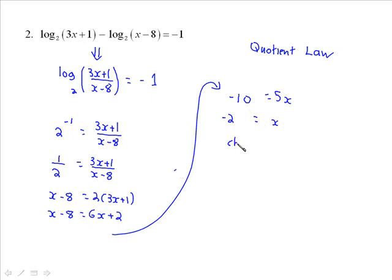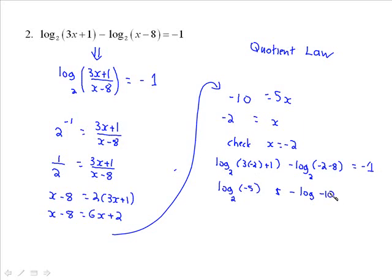Now you probably got a bad feeling about this one, but you need to check x equal negative 2. So you just sub it back into the original. Log base 2 of 3 times negative 2 plus 1 minus log base 2 of negative 2 minus 8 is equal to negative 1. And as soon as you see that you're taking the log of a negative number, then you've got it. So this is negative 6 plus 1 is negative 5, excuse me, minus the log of negative 10 base 2. And that's all I need to see. Reject, reject. So we reject x equal negative 2. So therefore there is no solution.